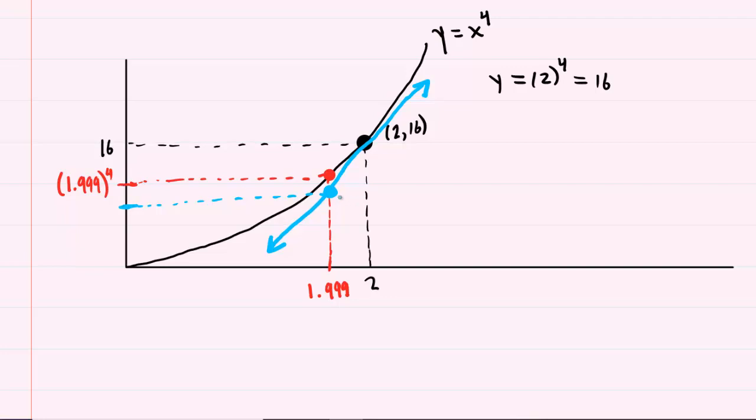So in essence, our goal becomes to find the equation of the blue tangent line and then plug 1.999 into it. And that will give us our linear approximation to this y coordinate, 1.999 raised to the power of 4.